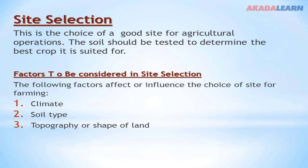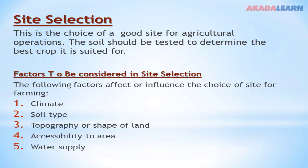Topography refers to the flatness or slopeness of the land. Every crop that is cultivated is cultivated because it is adapted to the climatic environment, and not all soils are good for cultivation of crops. Other factors include accessibility to the area — can workers and the farmer himself access it easily? Also, water supply is important: apart from rainfall, there is a need for water supply because workers and farm animals may need to use water.